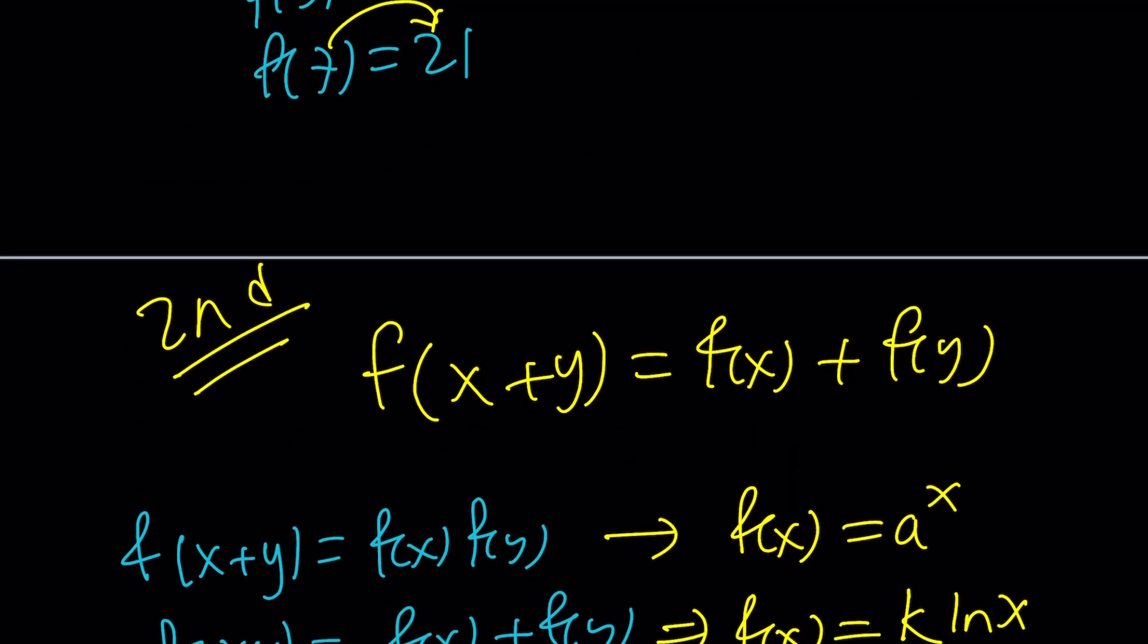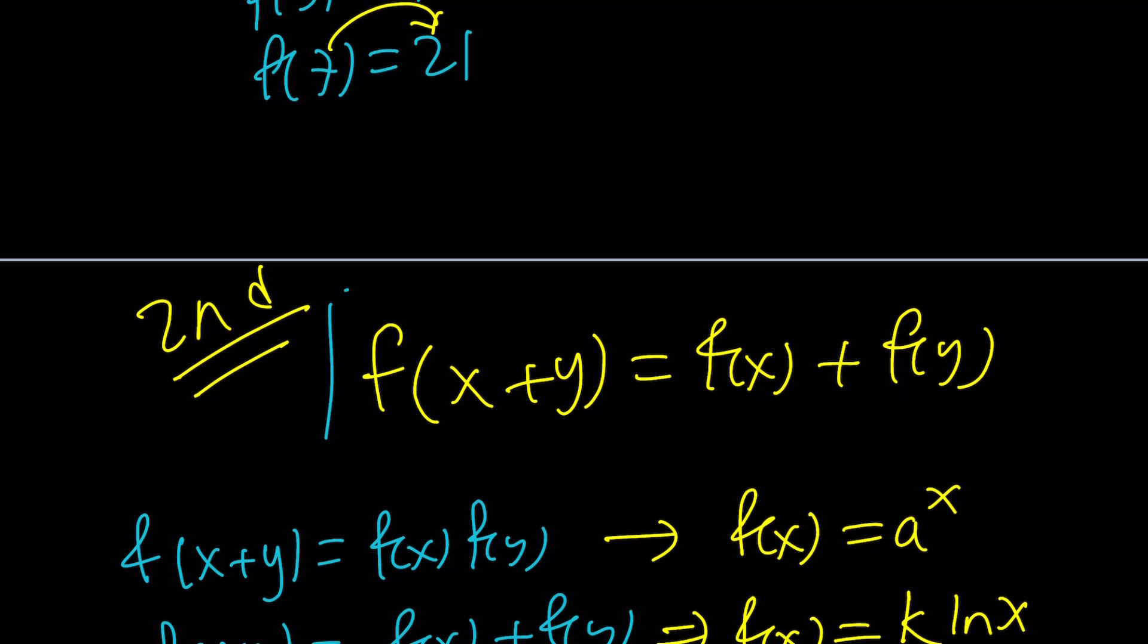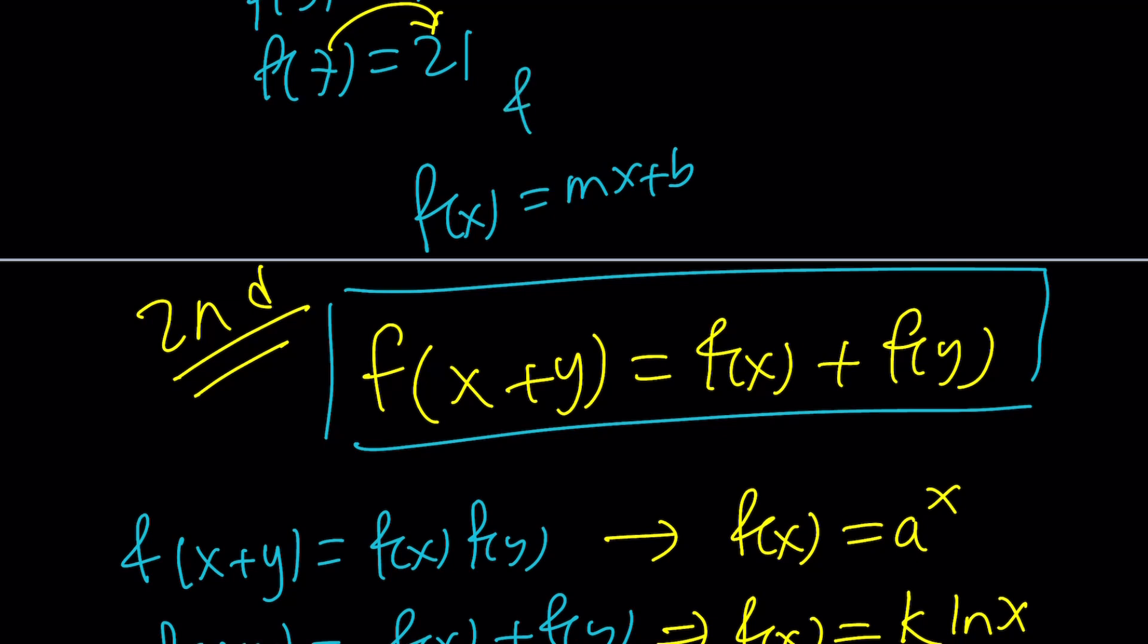This one, this one right here is actually going to be satisfied by a linear function. What kind of linear function are we looking at? f of x equals mx plus b. Let's go ahead and test it out. If f of x is that, then f of x plus y is going to be m times x plus y plus b, which is mx plus my plus b.